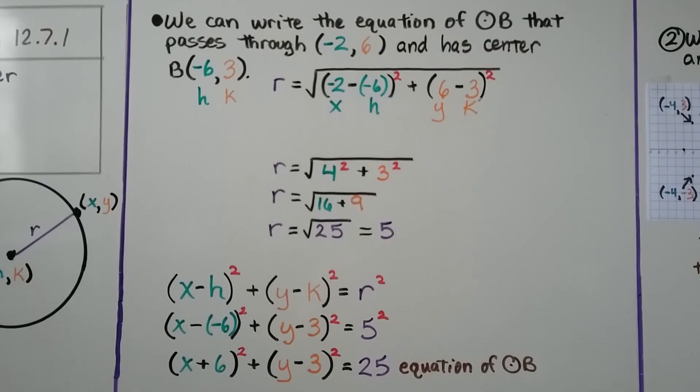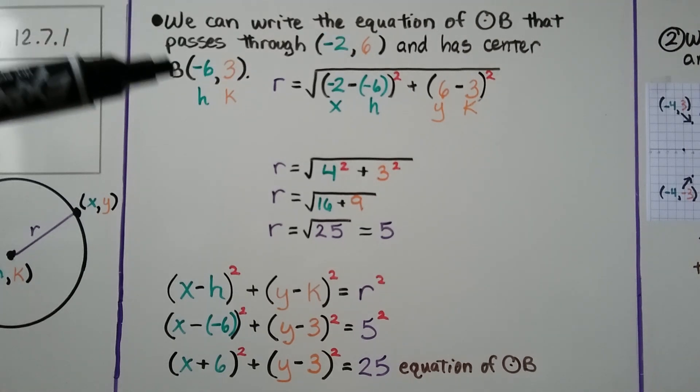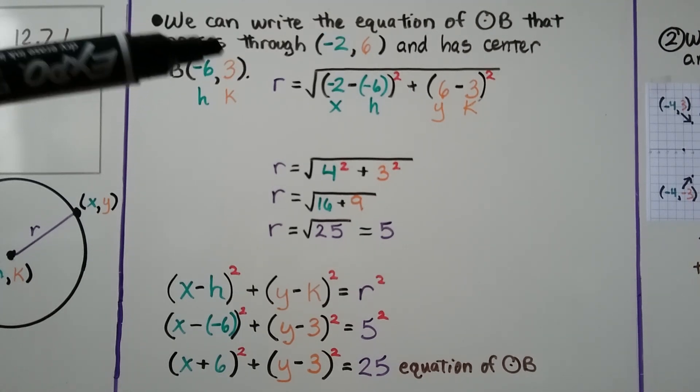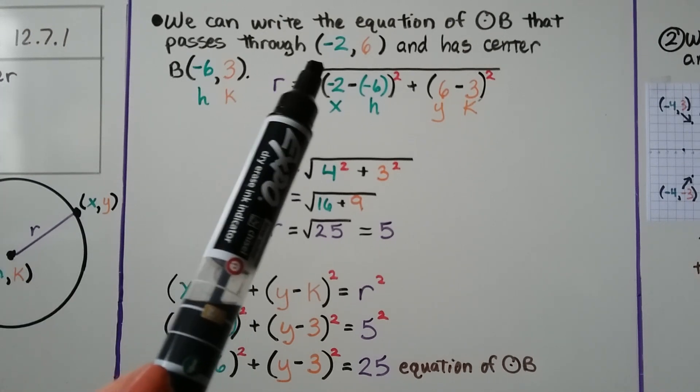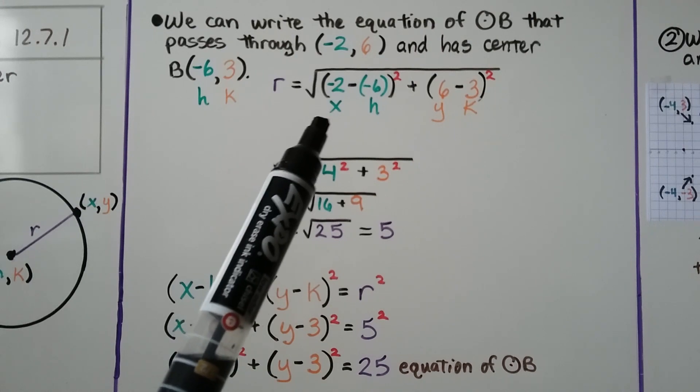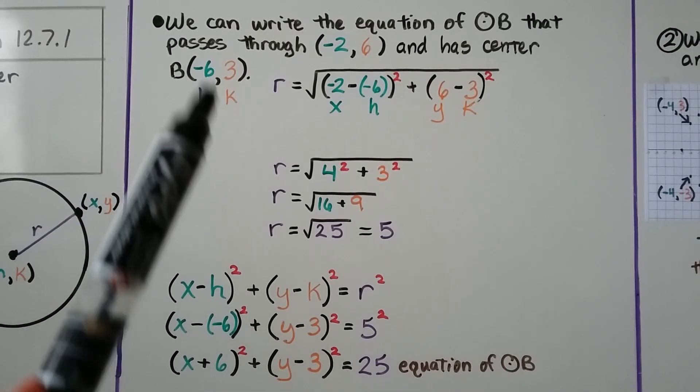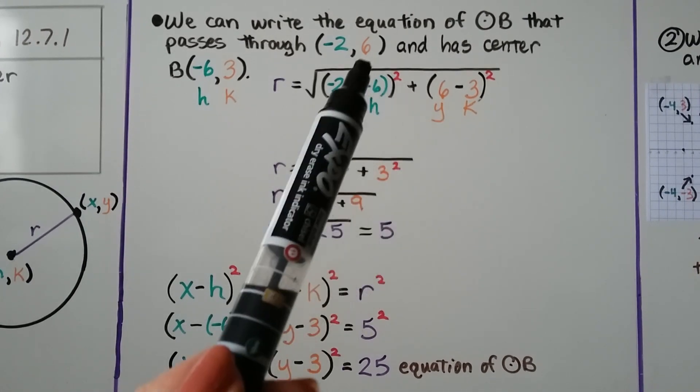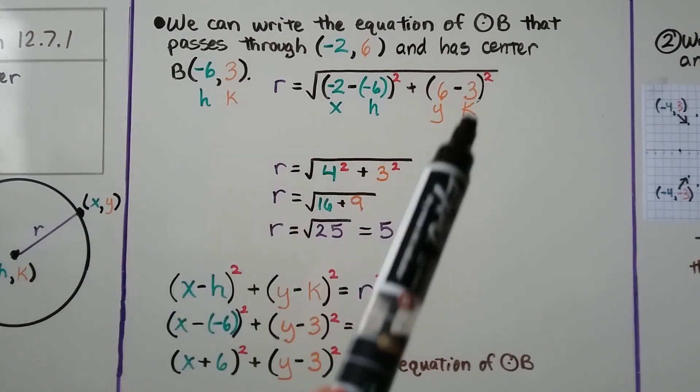We can write the equation of circle b that passes through negative 2, 6, and has center b as negative 6, 3. So that's going to be our hk. So it's going to pass through negative 2, 6. So we've got negative 2 for our x minus that negative 6, that's our h, plus, that's squared, plus the y value, 6, minus our k value of 3 squared.